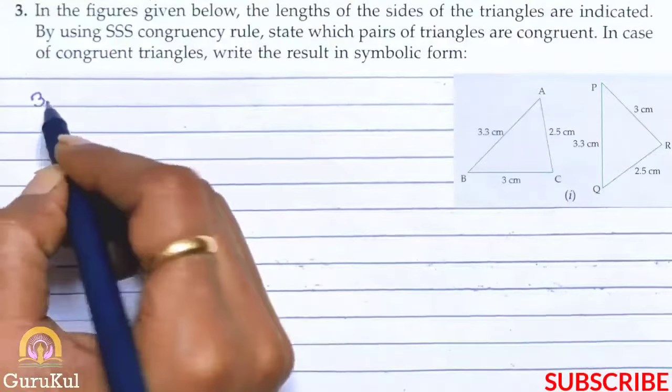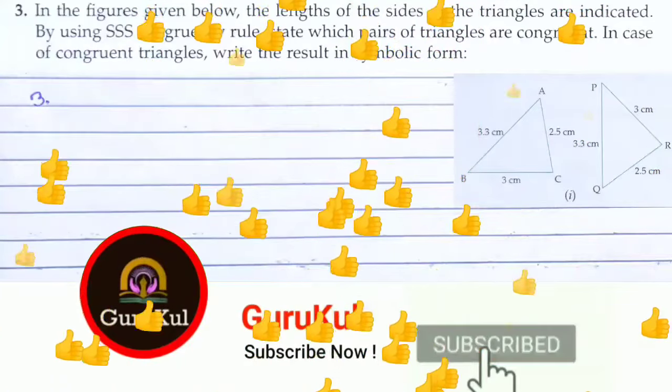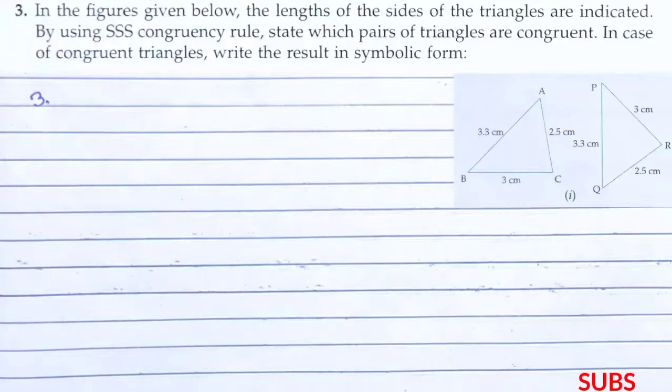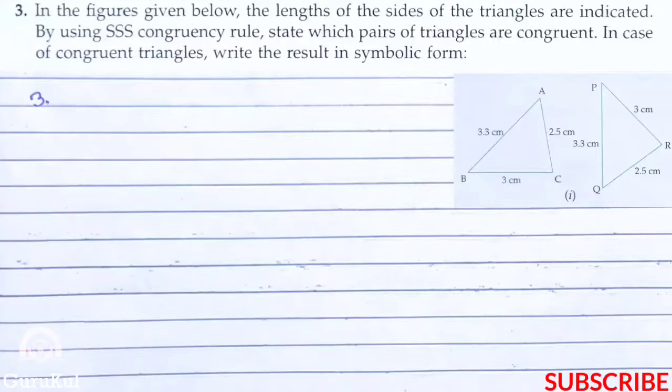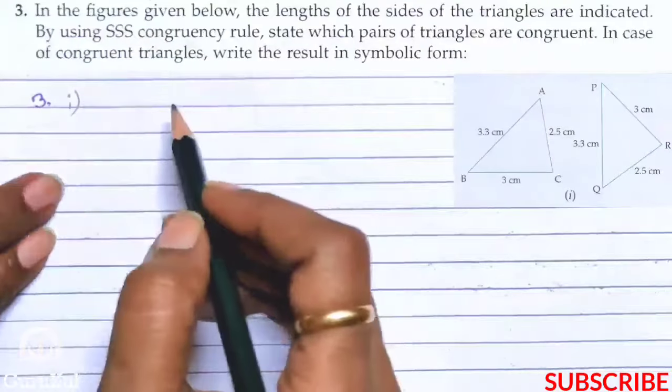Now question number three. In the figures given below, the length of the sides of triangles are indicated. By using SSS which is side side side congruency rule, state which pair of triangles are congruent, and in case of congruent triangles write the result in symbolic form. So this is the first part.